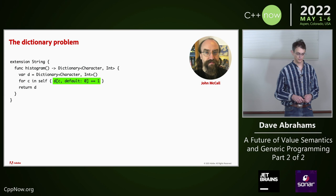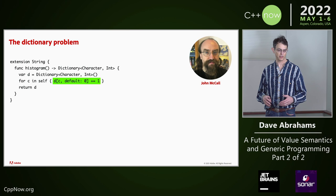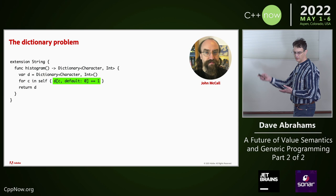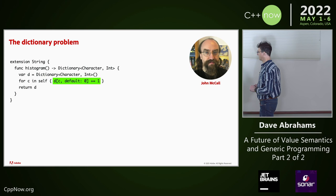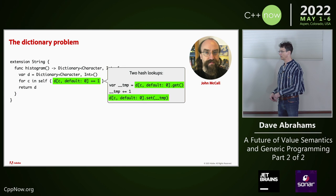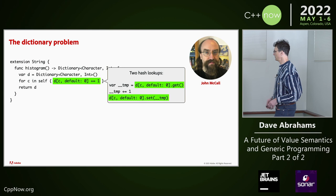John McCall, Swift's sort of language theorist, was thinking about this example and noticed a performance problem. Since all we have to express this are getters and setters, what happens when we update this value? Two hash lookups — one to do the get, then we lost all the information about where in the hash table we were, and another one to do the set. This is clearly not a good model.